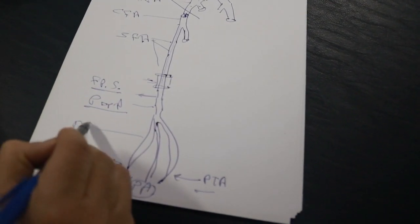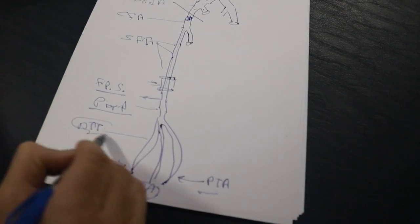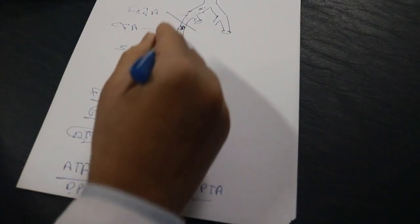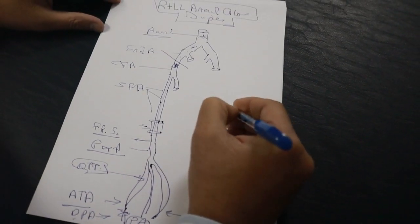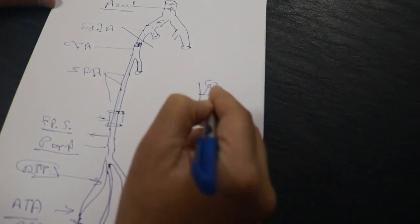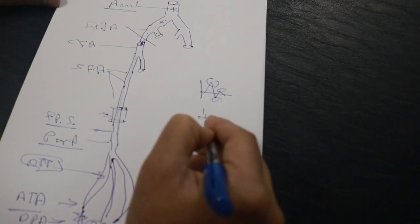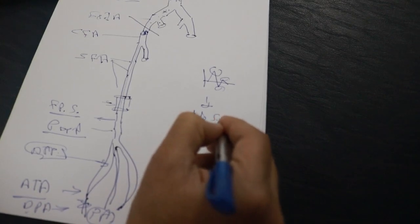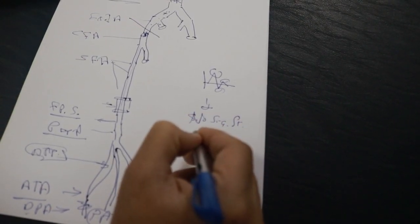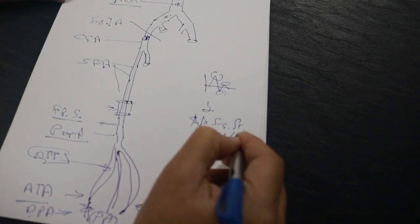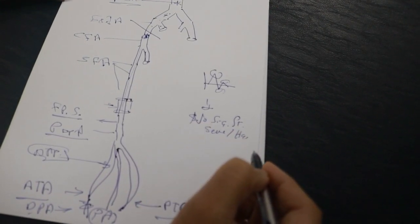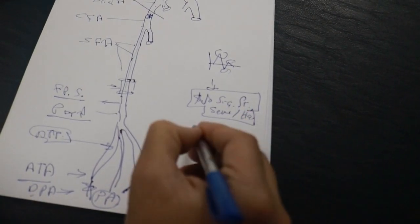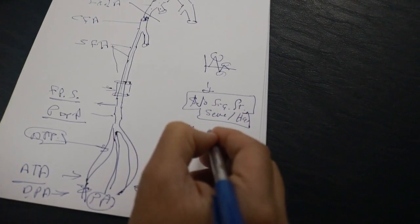This is anterior tibial proximal and distal. All of these was triphasic. Triphasic means no significant stenosis which is severe or high grade stenosis. There is nothing like this, and also no occlusion along our examination.